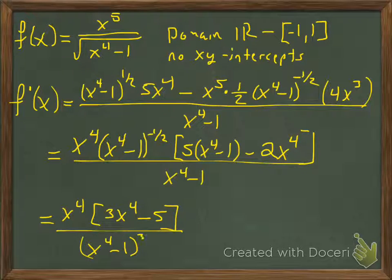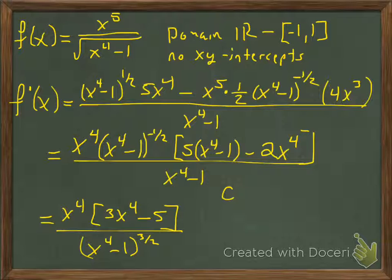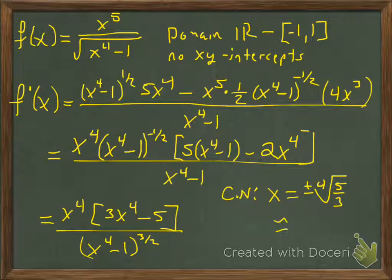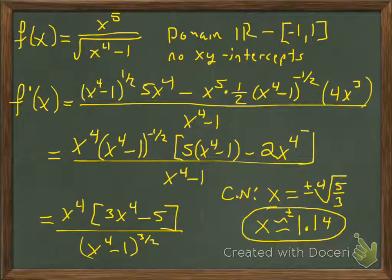All over the denominator squared, which is just x to the fourth minus one. We sent the x to the fourth minus one to the negative one-half downstairs. Upstairs simplifies to 3x to the fourth minus five, and on the bottom we have x to the fourth minus one to the three-halves power. When looking for critical numbers, we look for where the derivative does not exist — that would be plus and minus one, but they're not in the domain. x to the fourth equals zero at zero, but that's not in the domain either. So we set 3x to the fourth minus five equal to zero, giving plus and minus approximately 1.14.